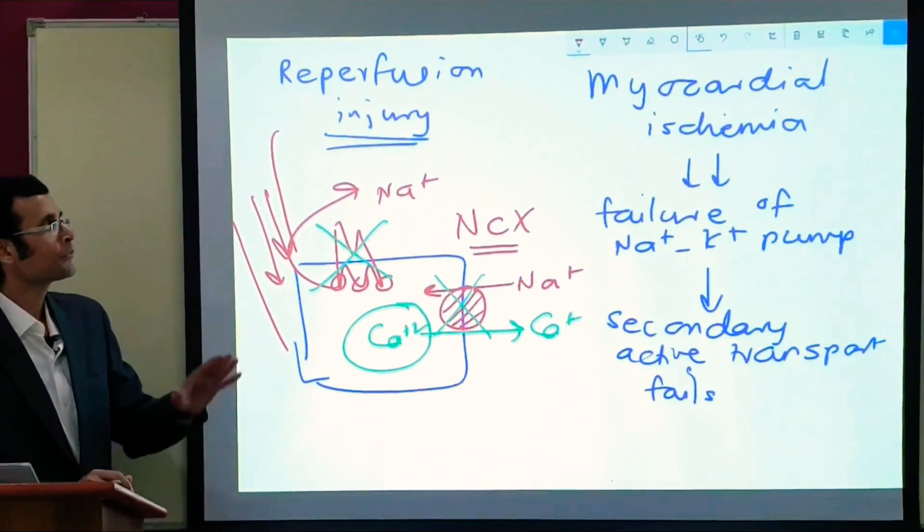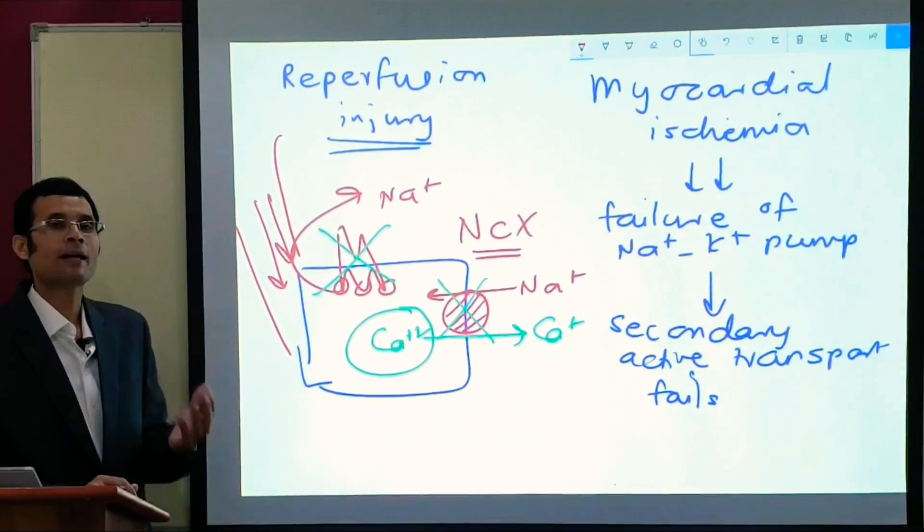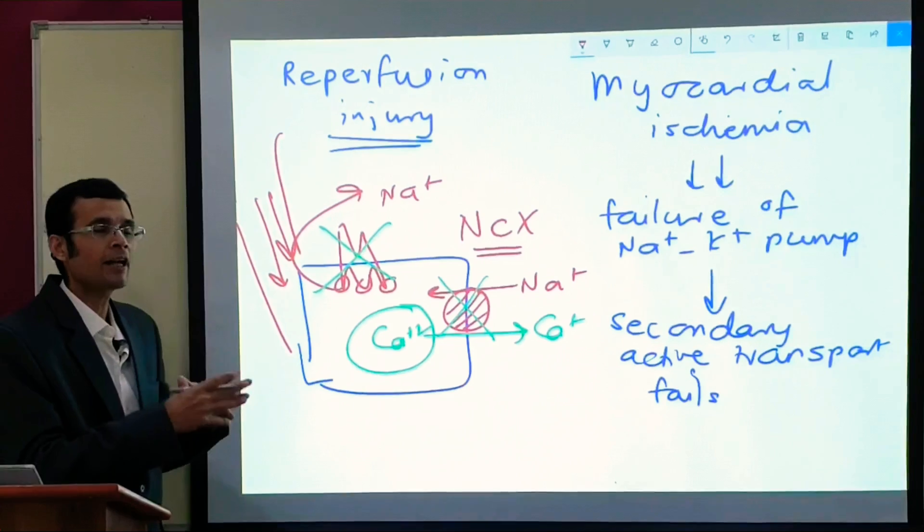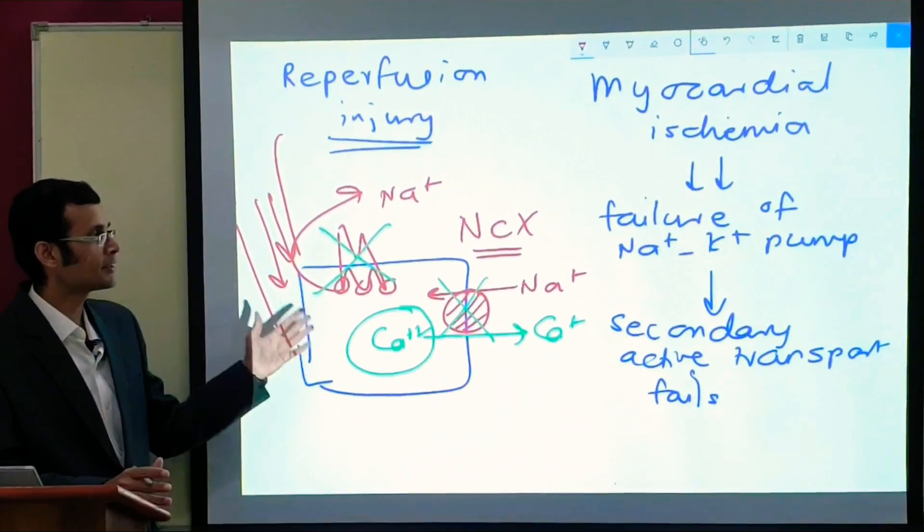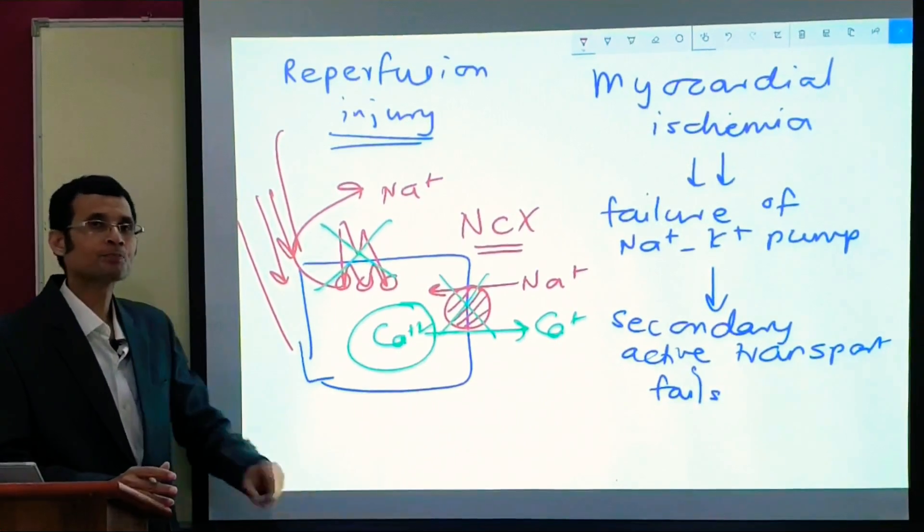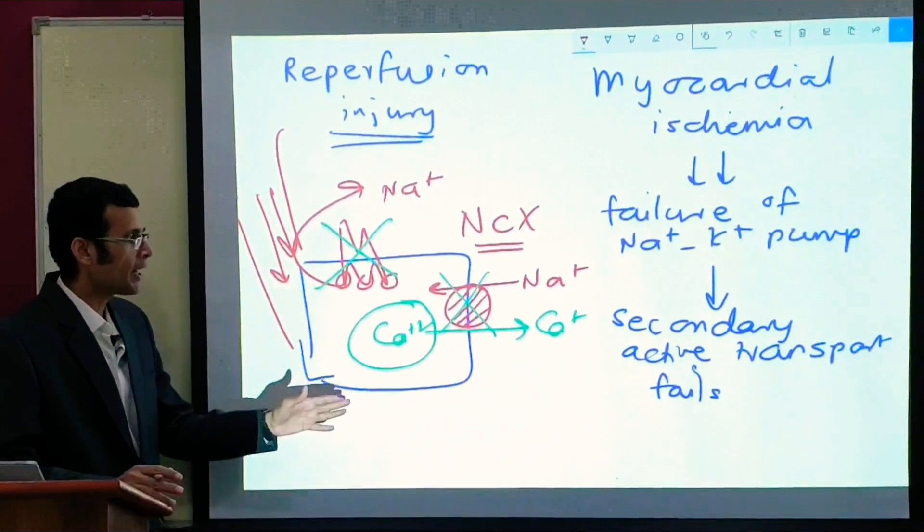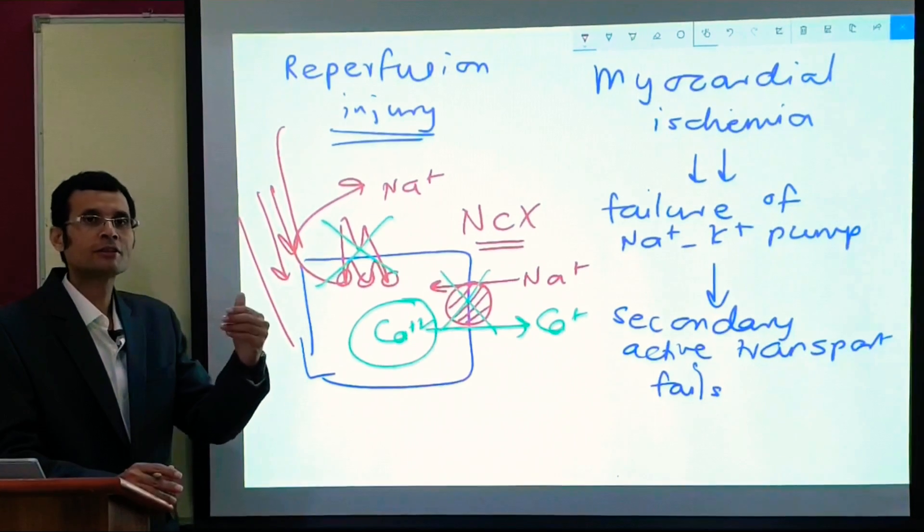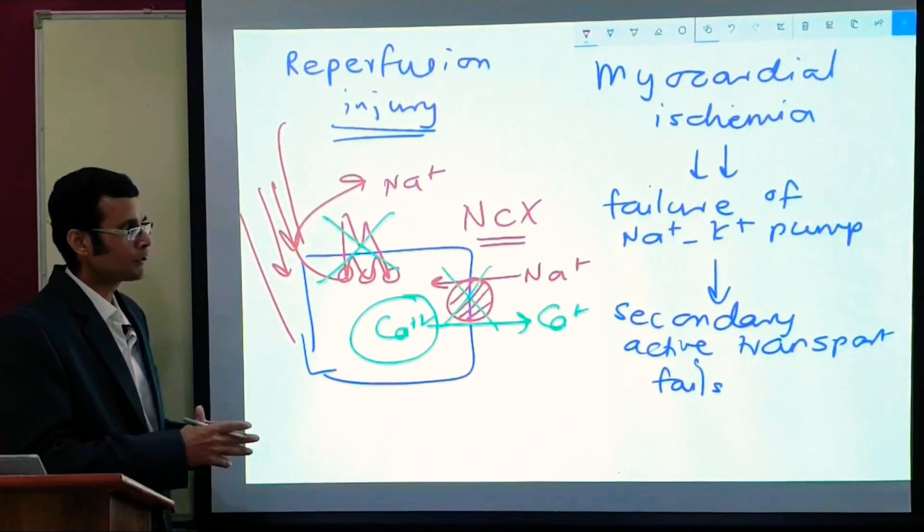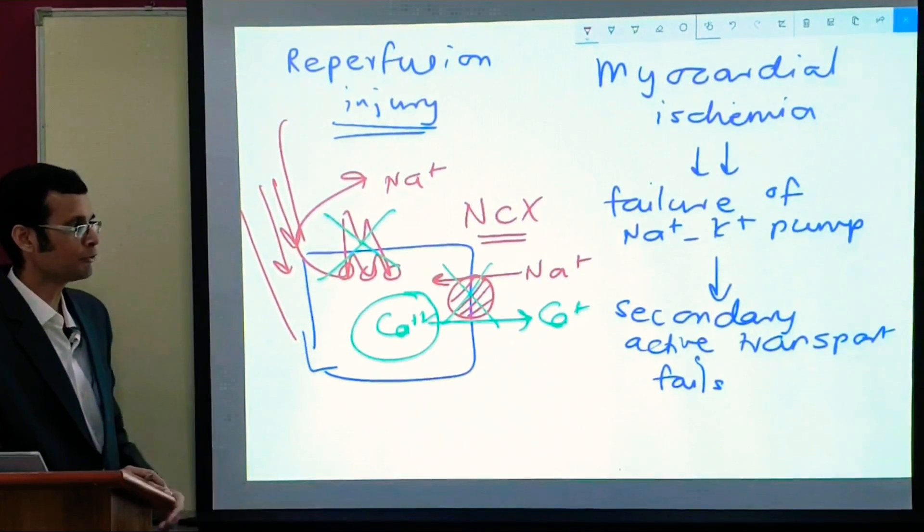And therefore in summary, reperfusion injury, the pathophysiology is high ICF calcium results in further damage. This damage is further exaggerated, further accentuated by the oxygen free radicals. So that's the pathophysiology of reperfusion injury.